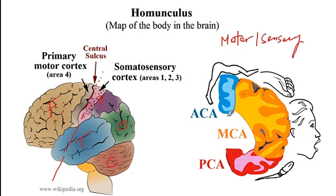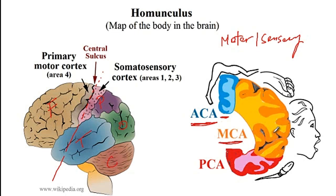The region shown in blue will control the motor as well as the sensation of the lower extremities, while the area shown in orange will control the upper extremities as well as the face, and the red area controls the tongue as well as the pharynx. The reason for different colors is that different arteries supply these regions: the anterior cerebral artery supplies the blue area, the middle cerebral artery supplies the orange area, and the posterior cerebral artery supplies the red area.